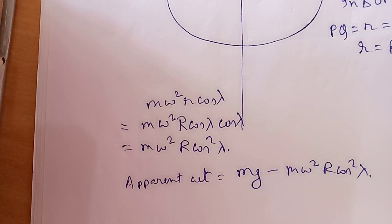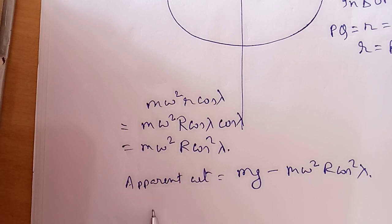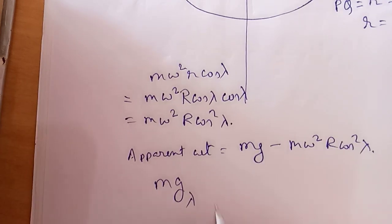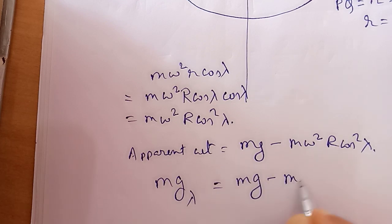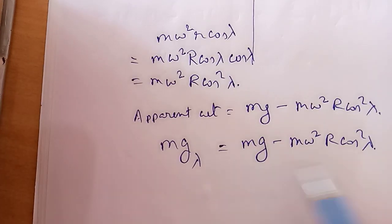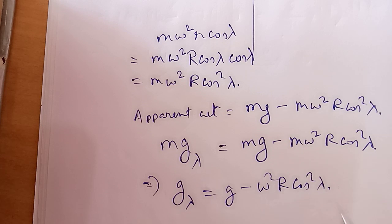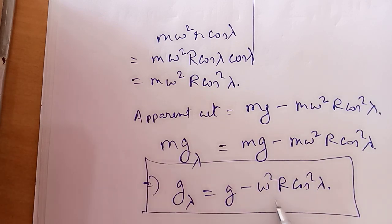In the apparent weight, mass cannot change because mass is constant; only the acceleration due to gravity changes. If we consider the apparent acceleration due to gravity at latitude λ at point P to be g_λ, then mg_λ = mg − mω²R·cos²λ. Cancelling m from all terms gives: g_λ = g − ω²R·cos²λ. This reduction in g is due to the rotation of the Earth.